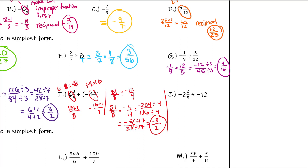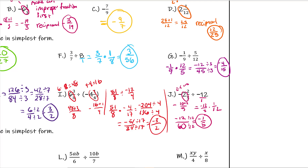For this next one, remember negative 12 would become negative 12 over 1. Go ahead and try this whole question on your own. When you're done, you should have ended up with negative 1 fifth. If you got negative 12 over 60, you still did the overall problem correctly — you multiplied by the reciprocal — you just didn't finish simplifying.